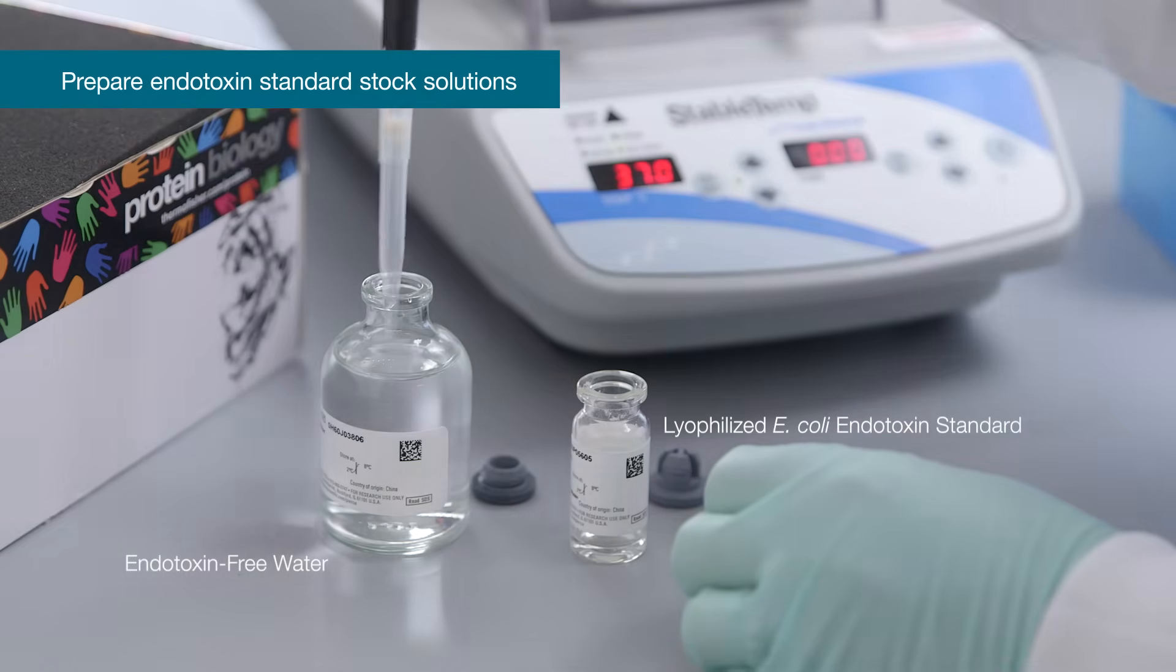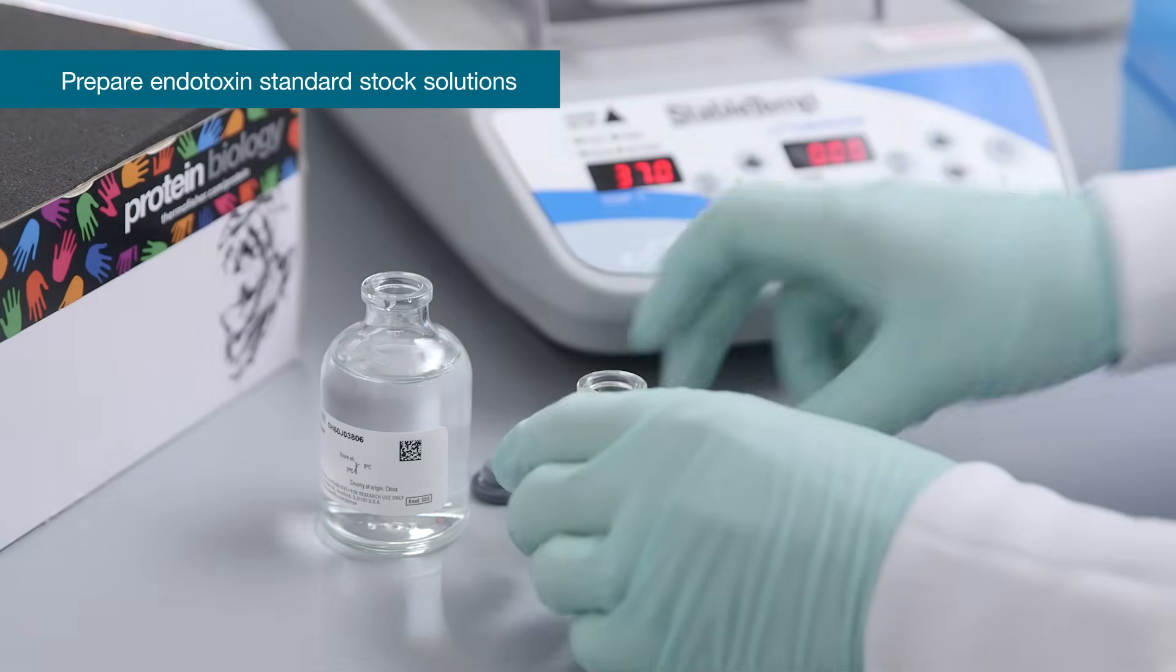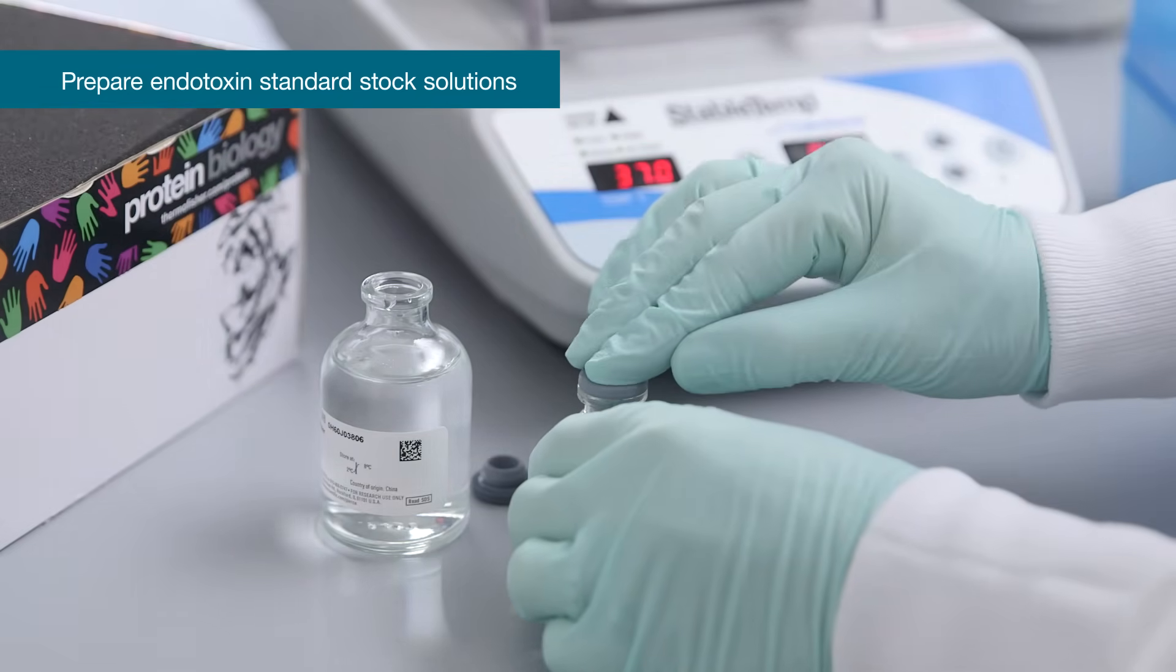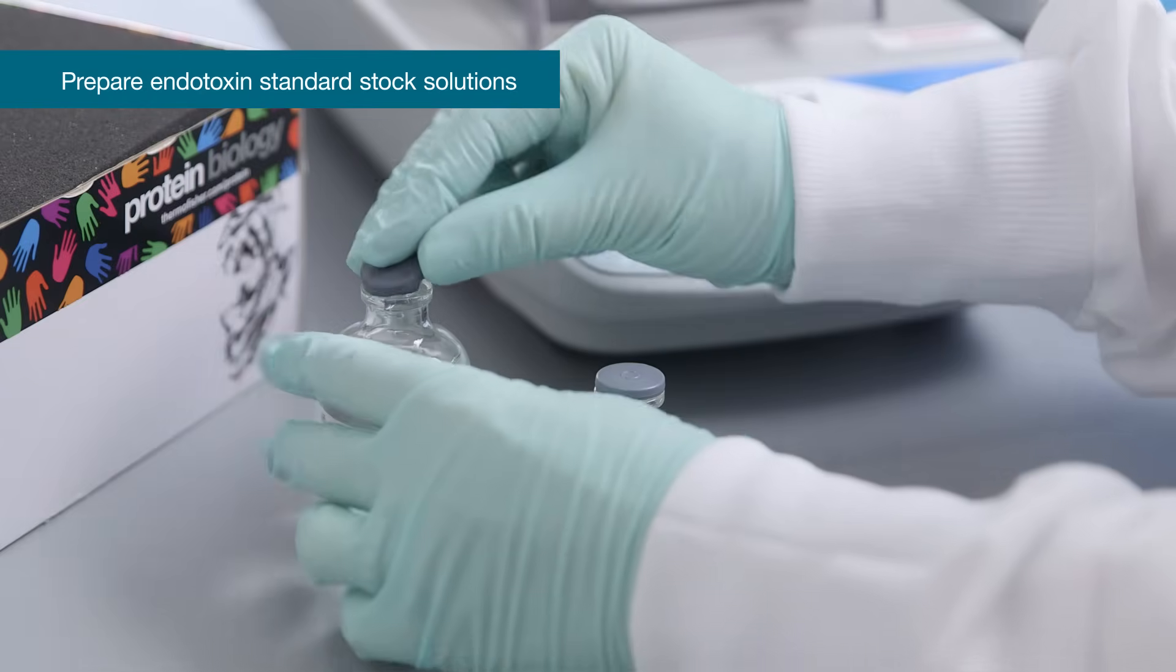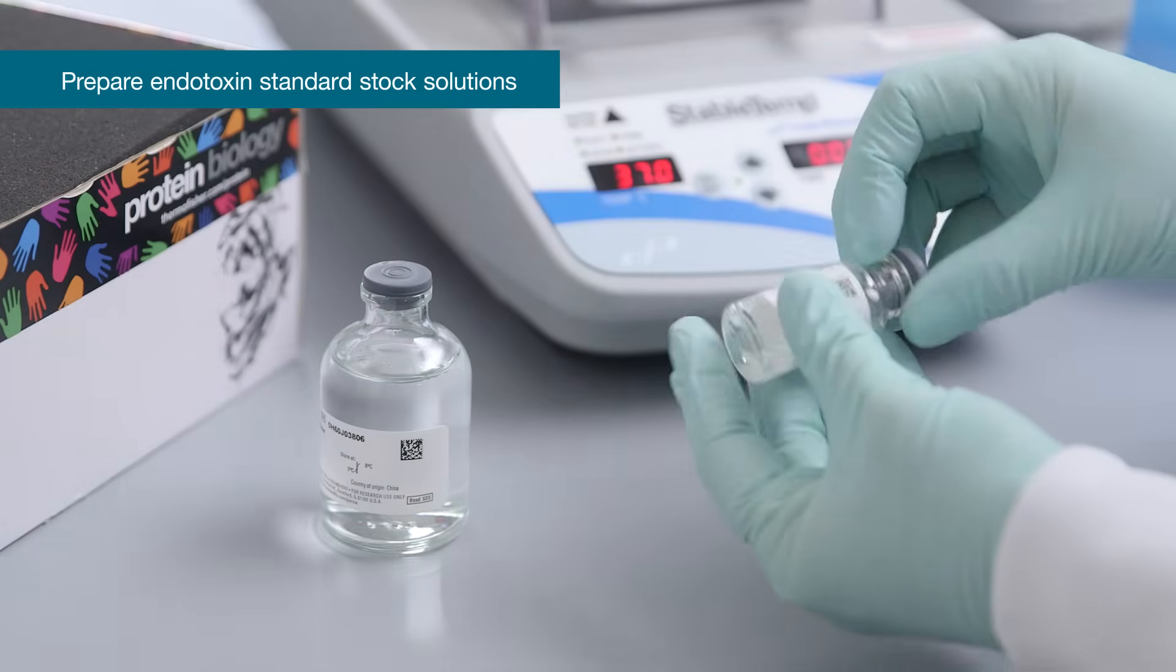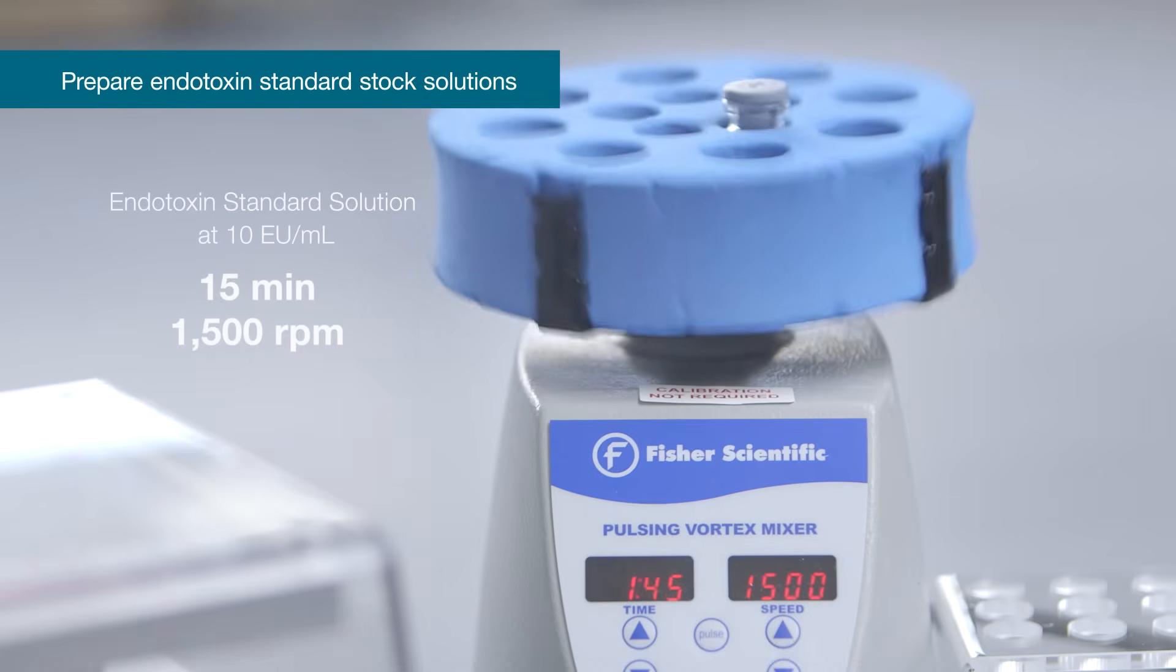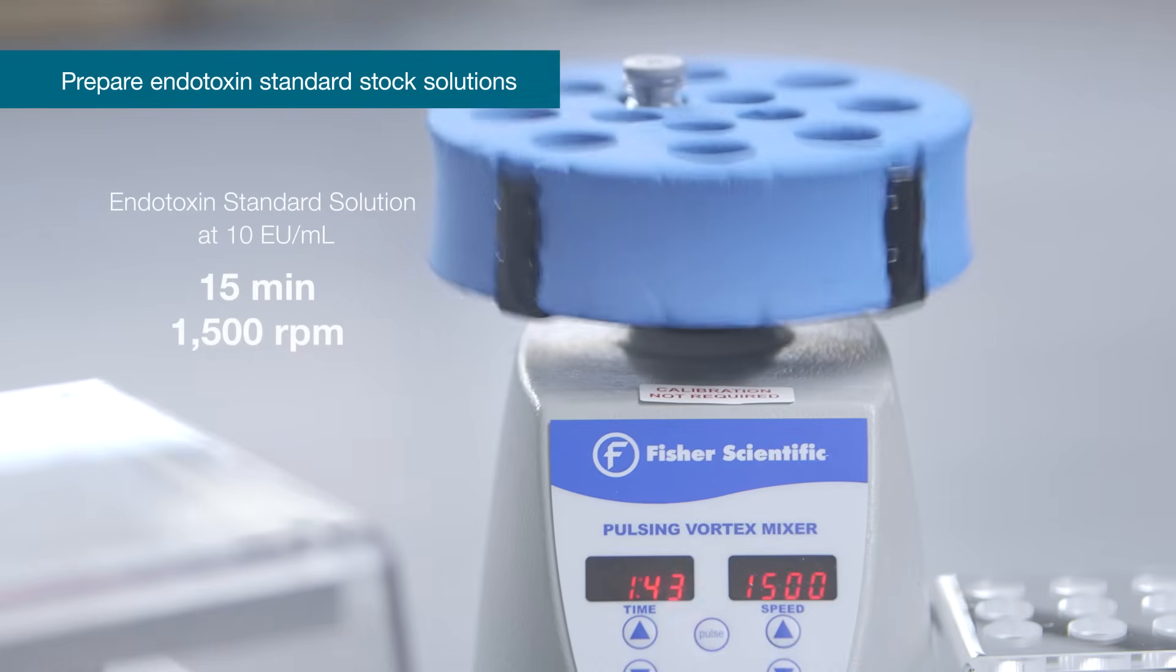Reconstitute the content by adding the appropriate amount of endotoxin-free water needed to make endotoxin standard solution at 10 endotoxin units per milliliter. Vortex the solution vigorously for 15 minutes at 1500 rpm.